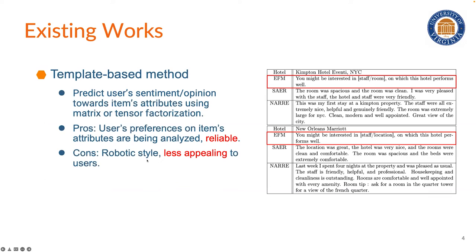All these three types of methods have their pros and cons. So for template-based method, although they can usually generate precise and reliable results, the robotic style makes the explanation convey less information and therefore it will be less appealing to users.